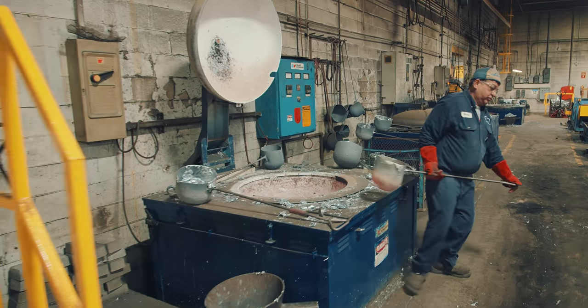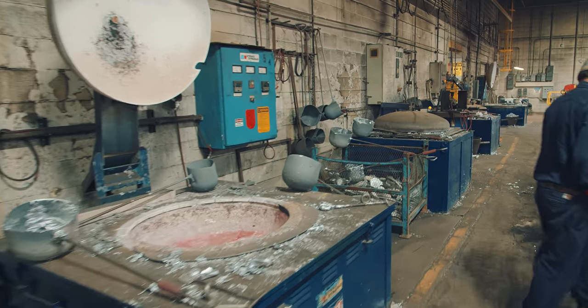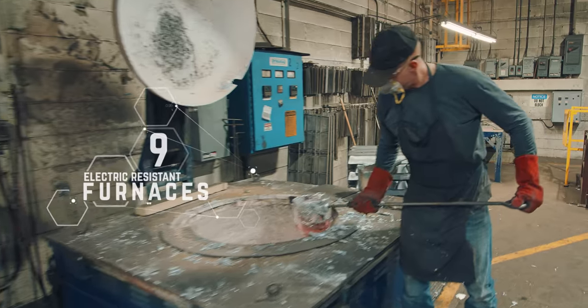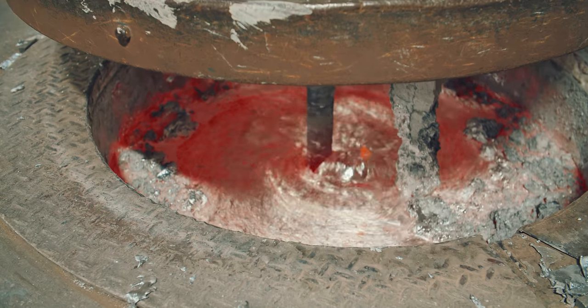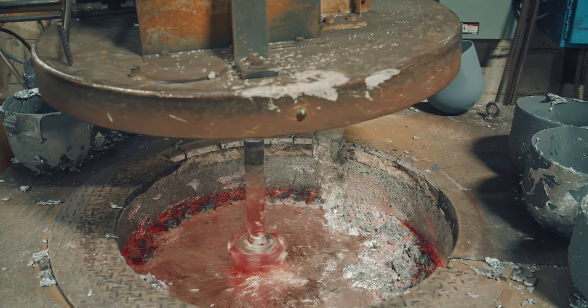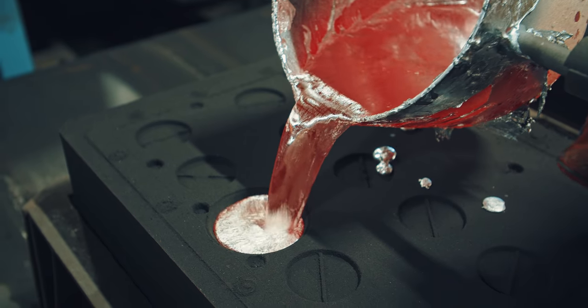Meteor Foundry's operations consist of two major processes: sand molding and permanent molding, using nine electric resistant furnaces equipped with three rotary degassers capable of delivering up to 15,000 pounds of liquid aluminum per shift, free of gas inclusions.